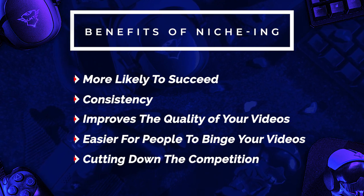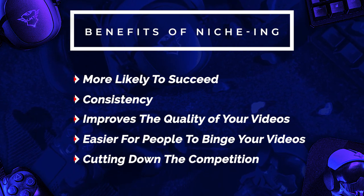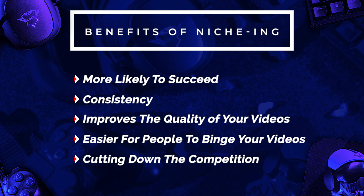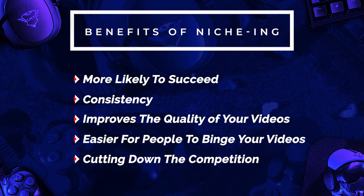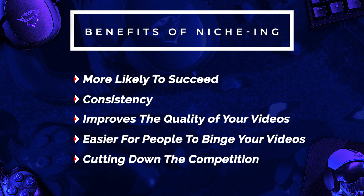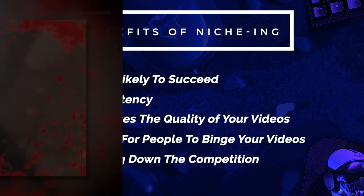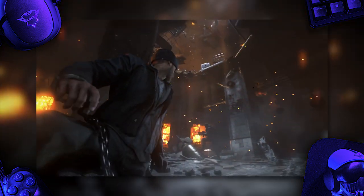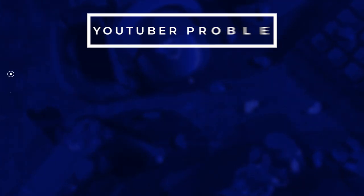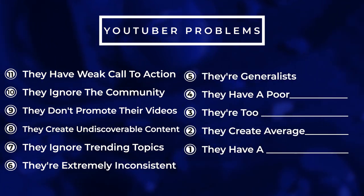Although a niche doesn't always guarantee success — you have to pick the right one — if you pick a niche and stick to it, you're going to be much more likely to succeed than if you post a variety of very general videos. There's consistency, you'll get better at that specific type of content, you'll make it easier for people to binge watch your previous videos, and most importantly you're cutting down on the competition. Pick a niche with demand but not a huge amount of large YouTubers already filling it, and you'll have a much higher chance of being discovered and recognized as an authority.